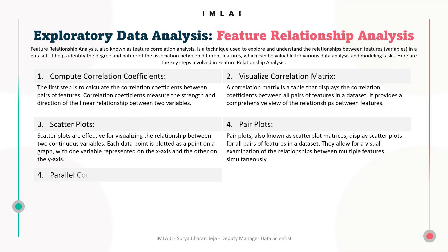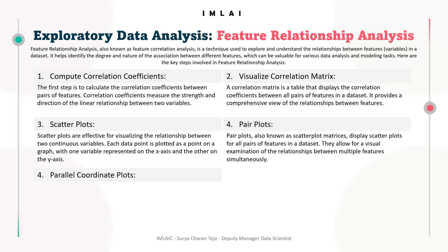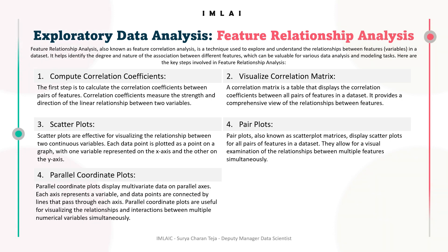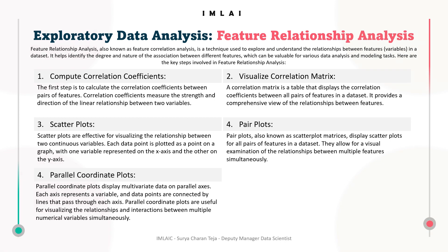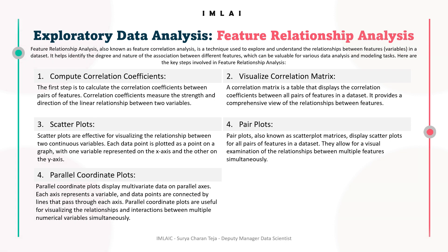After pair plots, we have parallel coordinate plots. Parallel coordinate plots display multivariate data on parallel axes — each axis represents a variable and data points are connected by lines passing through each axis. They are useful for visualizing relationships and interactions between multiple numerical variables simultaneously. Patterns such as trends, clusters, or outliers can be identified by observing how the lines behave across the axes.